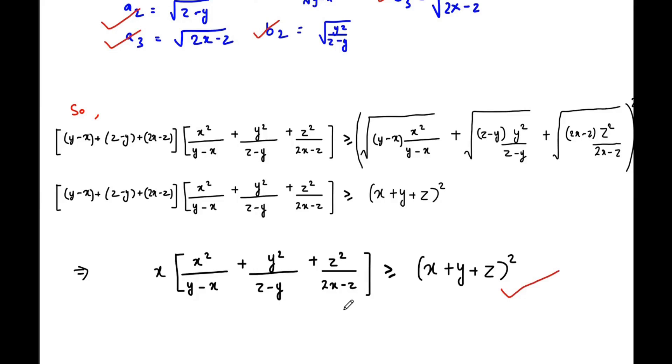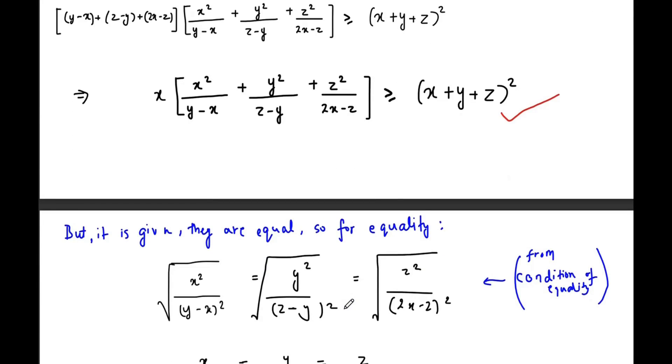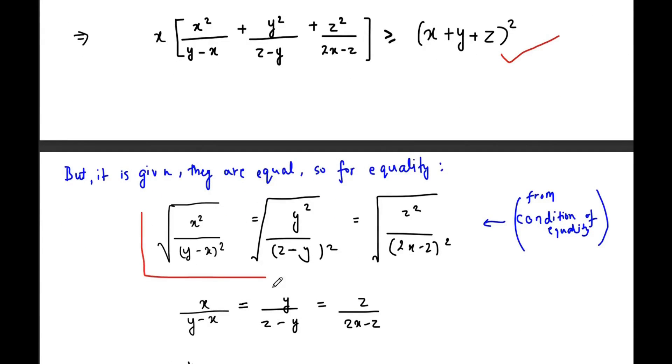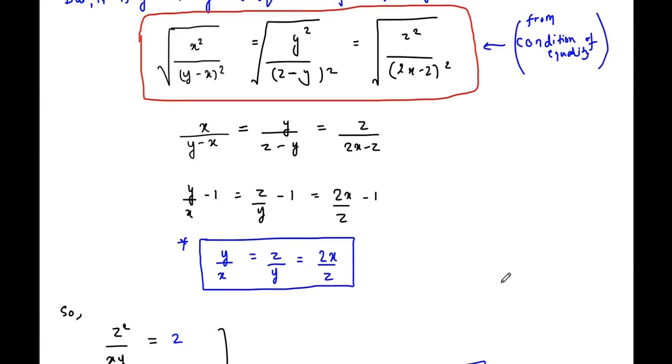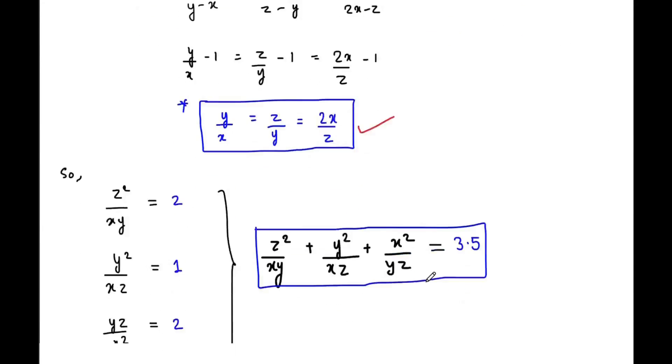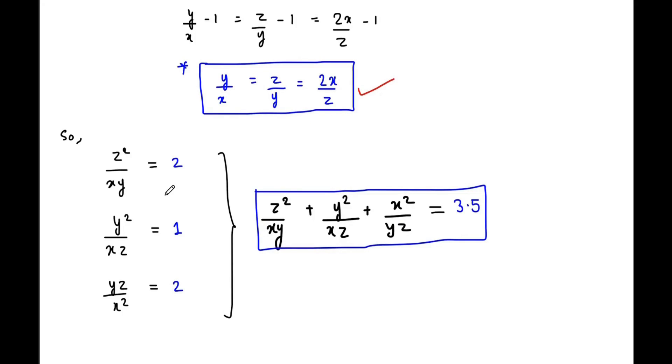But we already know that these two terms are equal. So now we just have to check the equality conditions. For equality to hold, this condition must satisfy. We check that y upon x equals z upon y equals 2x upon z. So z squared upon xy equals 2, y squared upon zx equals 1, and yz upon x squared equals 2. So x squared upon yz equals 1 by 2. Adding these three expressions, we finally get the answer to be 3.5.